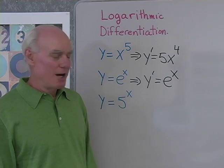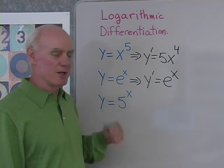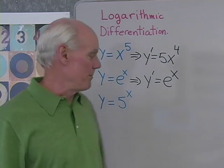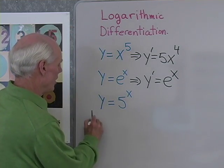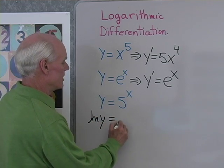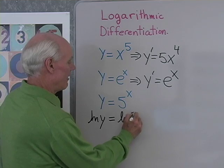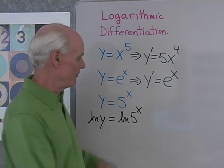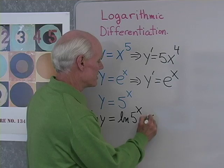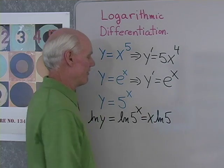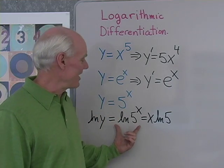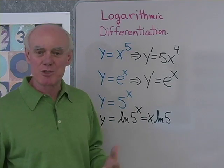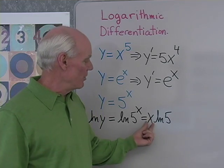It turns out that logarithms allow us to take exponents and write them as coefficients. So what I'm going to do is just take the log of both sides of this expression and see what happens. If I take the log of the left side, I have log y is equal to log of five to the x. Now I can use my properties of logarithms to take that exponent and turn it into a coefficient, and rewrite this as x log five.